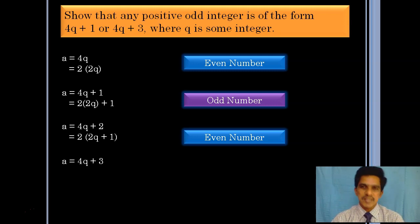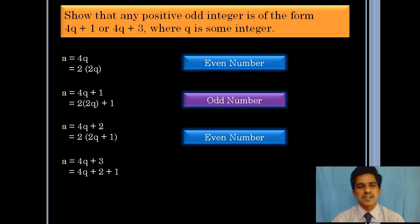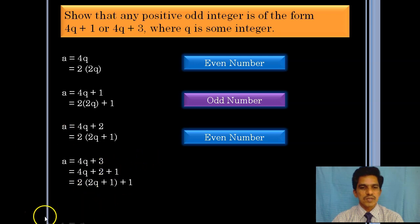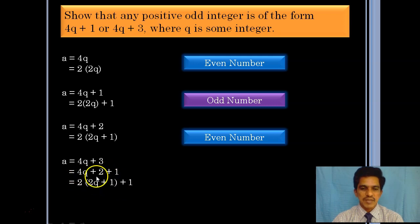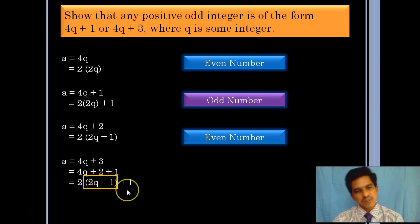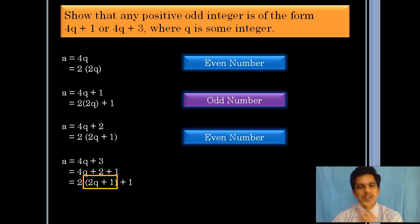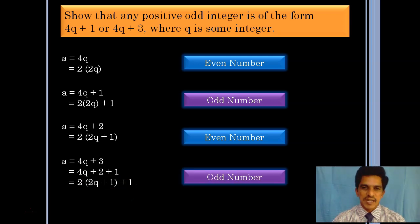Let us take the last case: a is equal to 4q plus 3. Here I write 3 as 2 plus 1, and then take 2 as common from the first two terms — 4q and 2 — giving 2 times (2q plus 1), and then plus 1 remaining. So this is 2 into some integer plus 1, which means the number is odd.